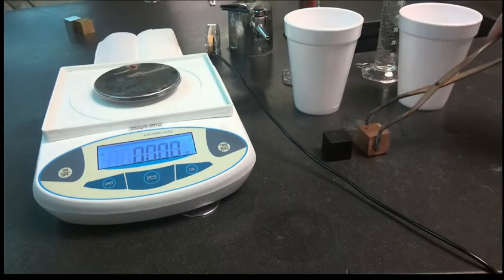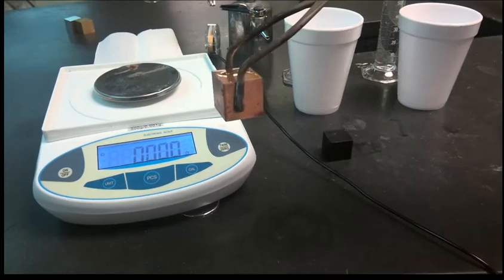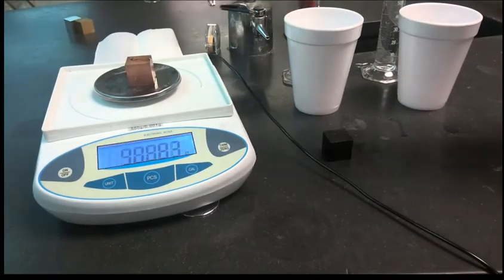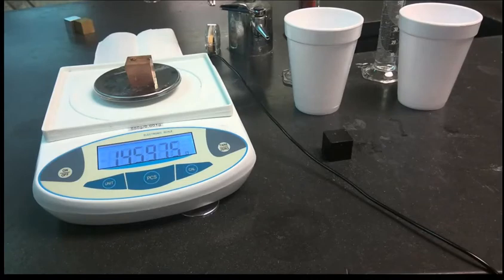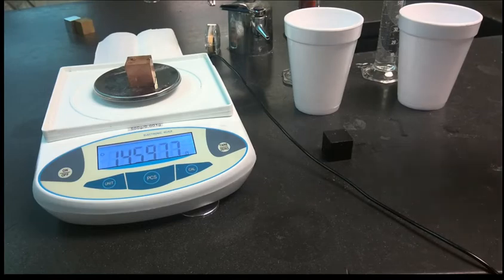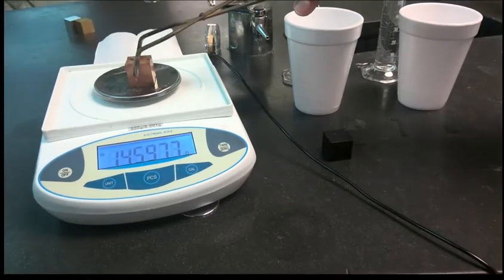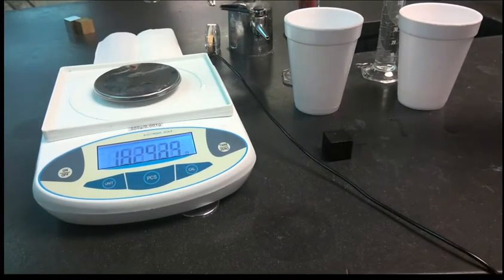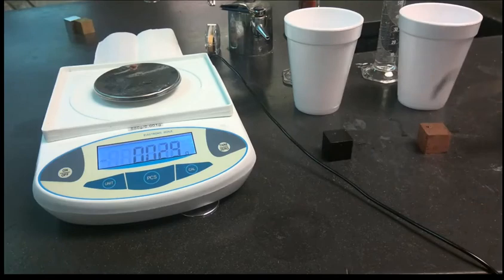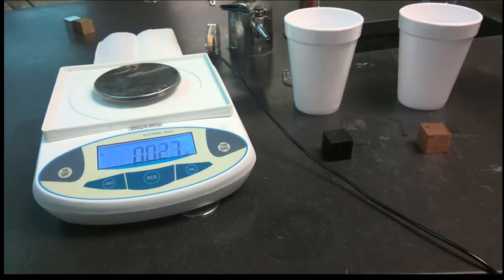Then we have this copper cube. The mass of it is reading 145.977 grams. 145.977 grams - mass of the copper cube.